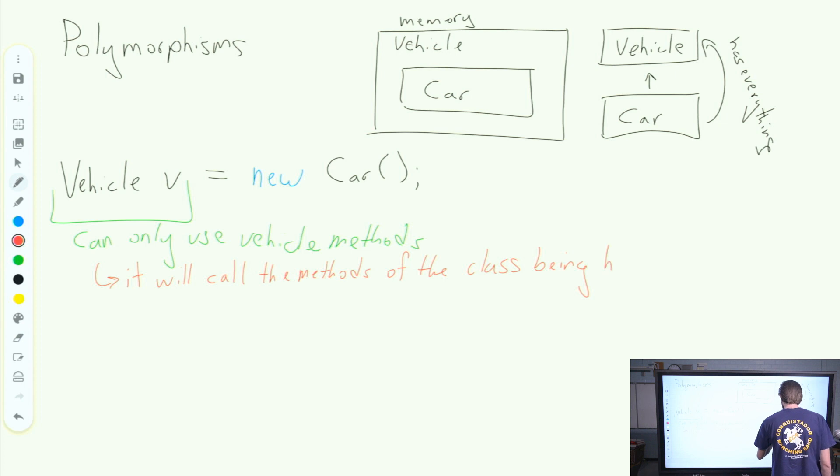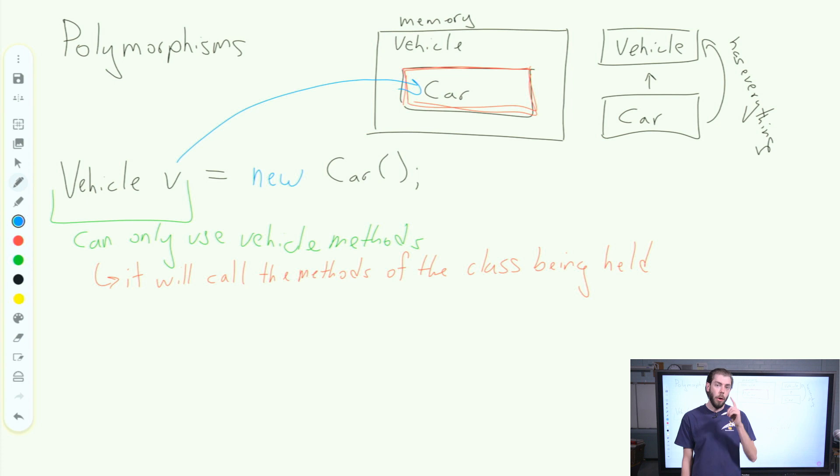However, it will call the methods of the class being held. What do I mean by that? So in this case, we're holding a car object in our vehicle, V. So when Java calls that vehicle method, it's going to look in that memory location. And what does it see in that memory location? It sees a car object. So it will call on the car. So if I've overridden my different methods, if I've overridden them with the car object, or the car class, I should say,